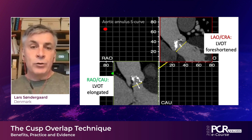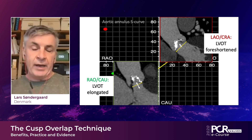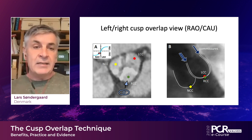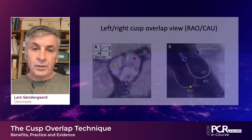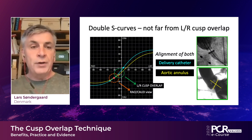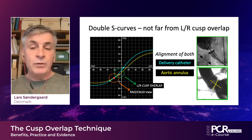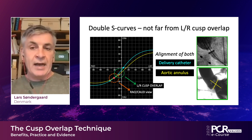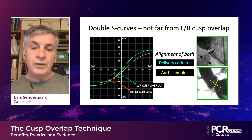Another benefit from going from LAO to REO-caudal is that we're going to elongate the left ventricular outflow tract, so we have a better understanding of how deep or how high we are with our implant. Now we're talking about this cusp overlap view where we have the right and the left coronary cusp overlapping each other on the fluoroscopy view, and that's often going to bring us to an REO-caudal projection — very close to where these two S-curves cross. The benefit of going to REO-caudal projection, using this cusp overlap view, is that you have both your delivery catheter and the aortic cusp aligned with the imaging plane, giving you a better understanding of depth, and allowing a more accurate deployment with a higher precision without risk of a pop-out of your device.